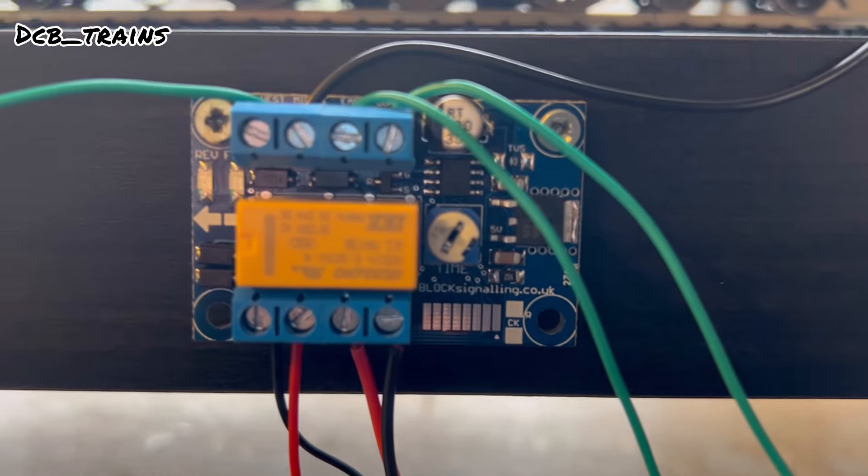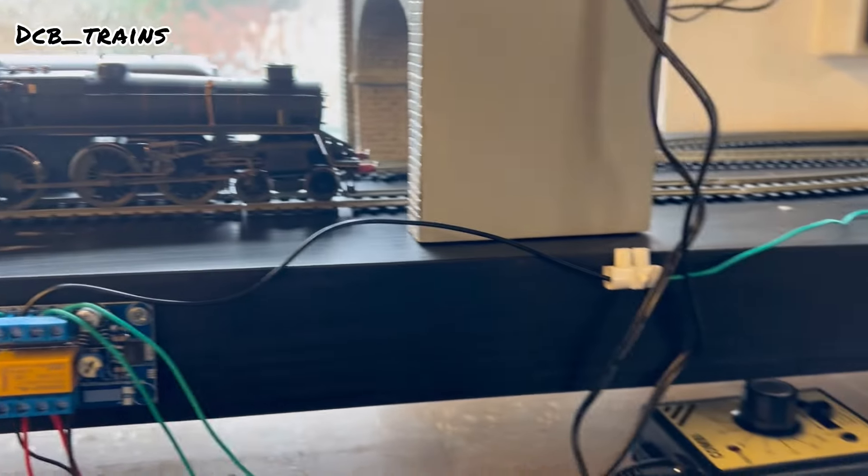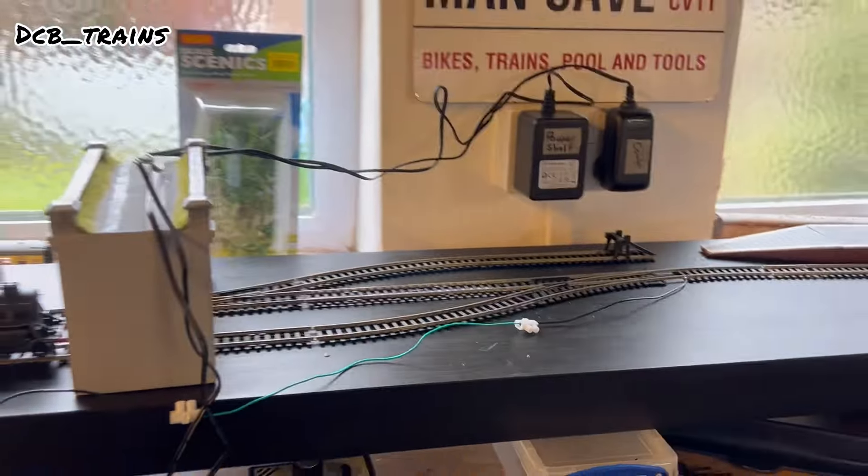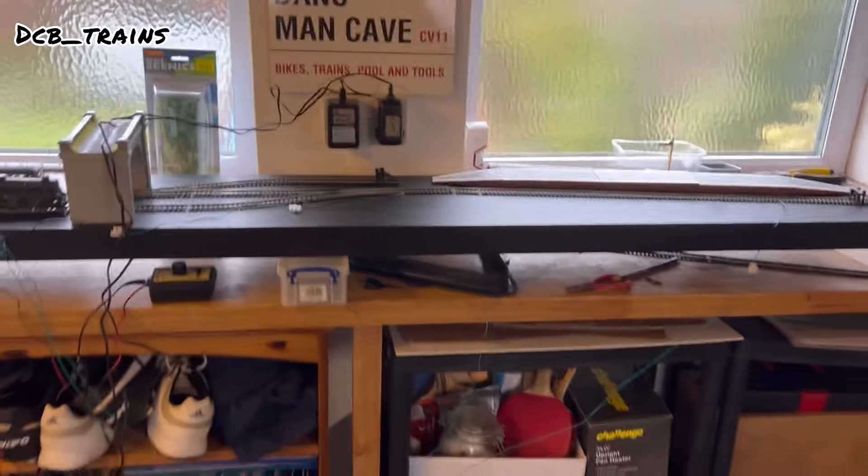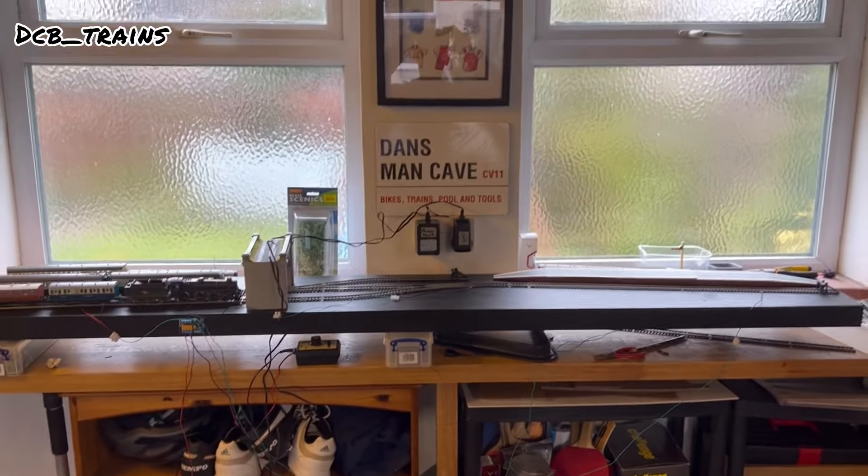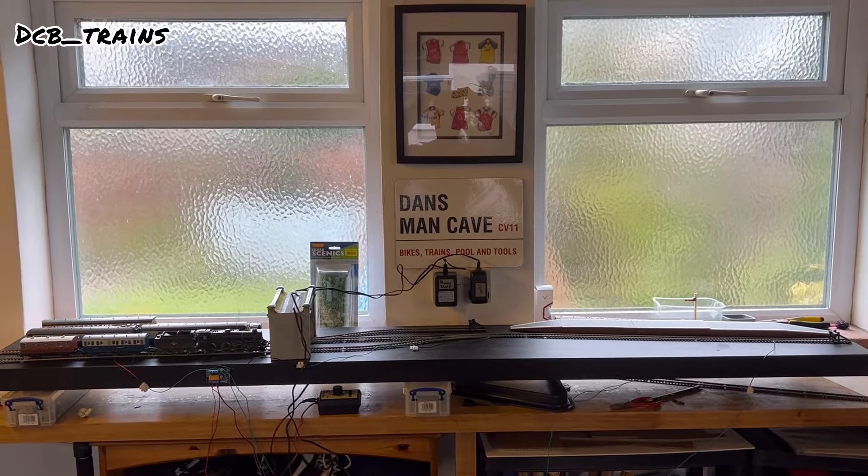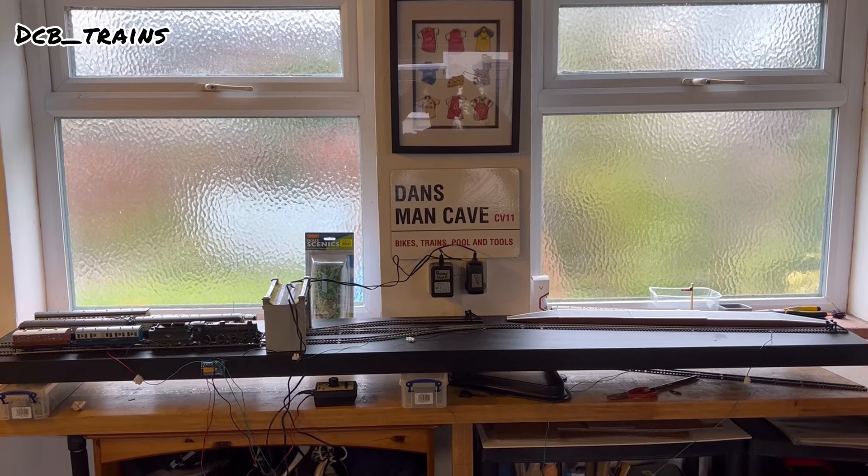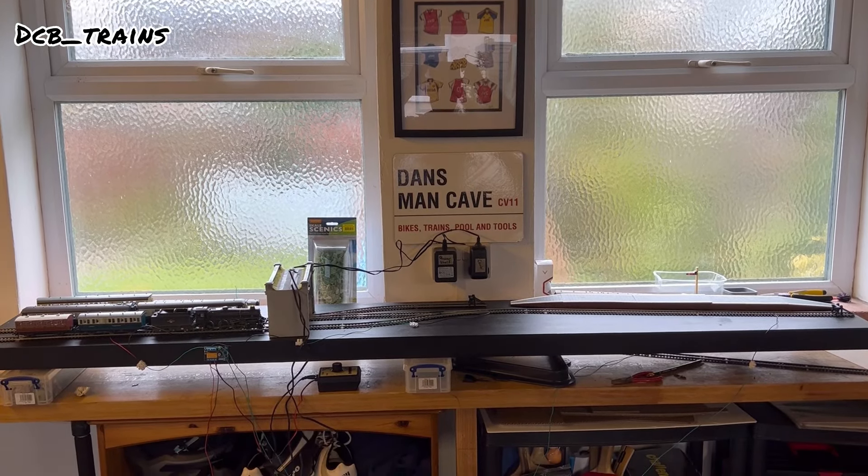So this is the actual shuttle unit itself. This is from Block Signaling but I'll go through that in a few minutes. But yeah that's basically the plan: four foot scenic area, two foot roughly just to store the trains in.